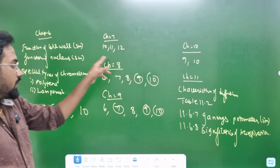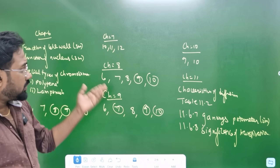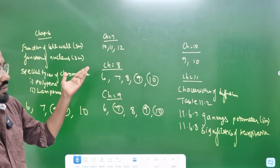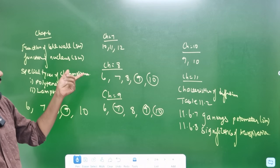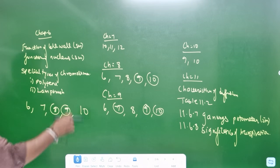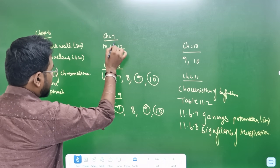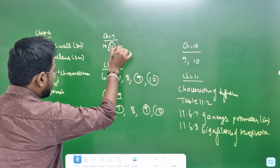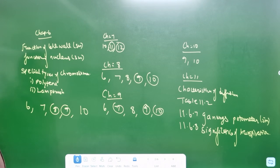Chapter 7 — sections 10, 11, 12. Metasismia is — confirm. This is metasismia — 5 marks.